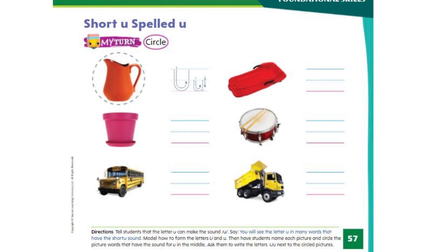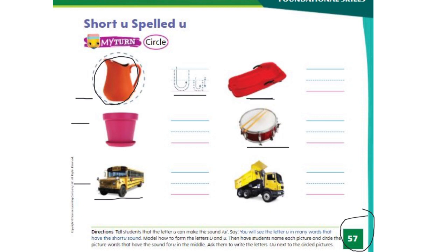Now let's move on to page number 57 in your books. You circle all the words with U in the middle. The first one is already done for you. This is a jug. J-U-G. Jug. So you circle it and you write the letter U on the line. Now let's move on to the second one. Pot. P-O-T. Pot. If you hear the short U in the word pot, you circle the picture and write U on the lines. Let's move on to this one. Bus. B-U-S. Bus. Now this one. Sled. S-L-E-D. Sled. Drum. D-R-U-M. Drum. The last picture. Truck. Tr-U-K. Truck.